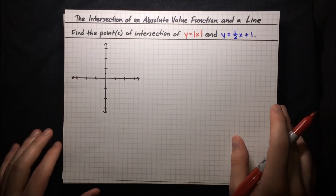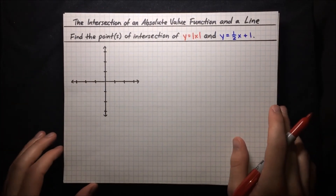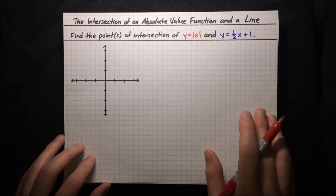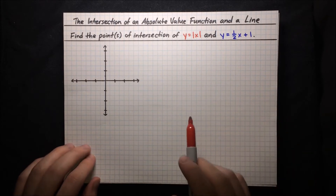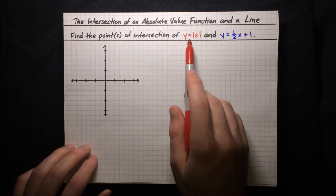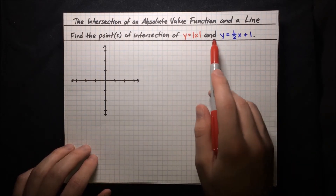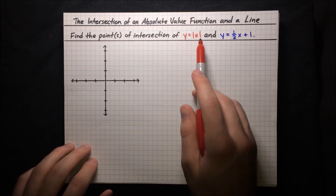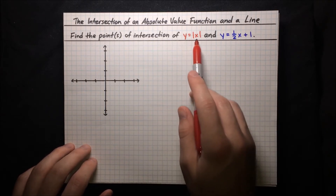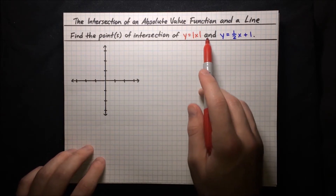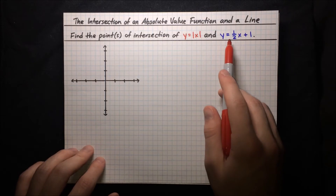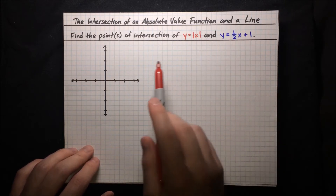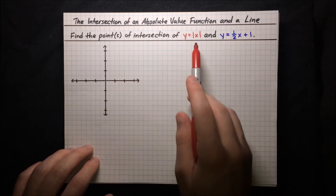Now let's actually tackle a concrete problem where we have to find the actual points of intersection of an absolute value curve and a line. We've got a standard absolute value curve, y equals absolute value of x, and then a line, y equals one-half x plus one. Let's start off by just graphing these two.